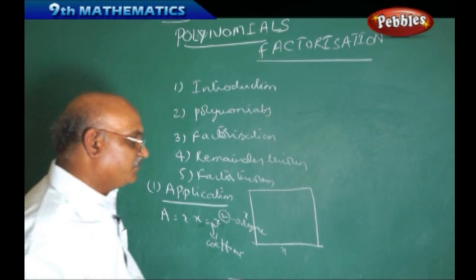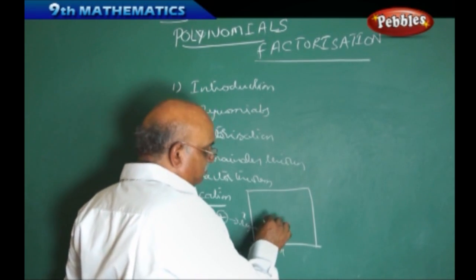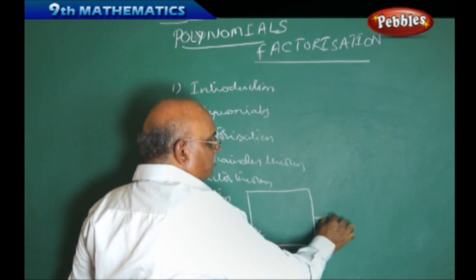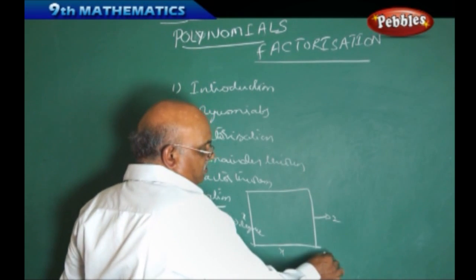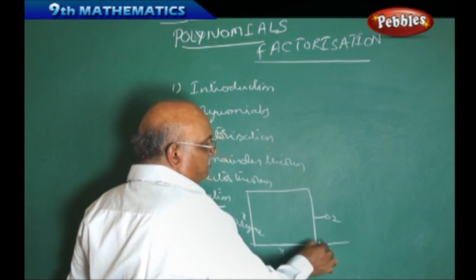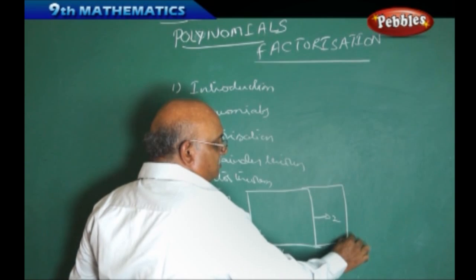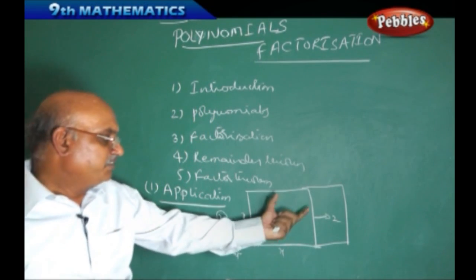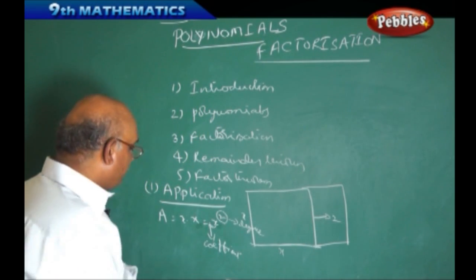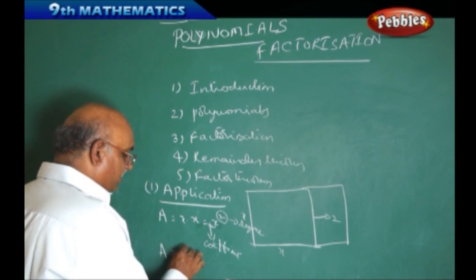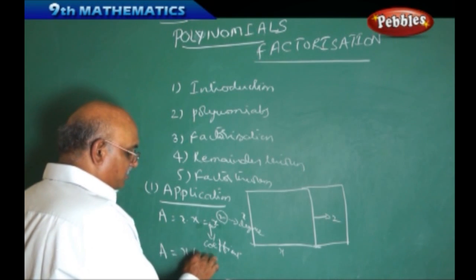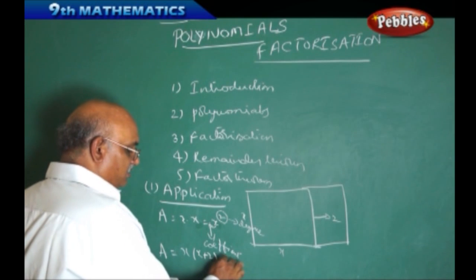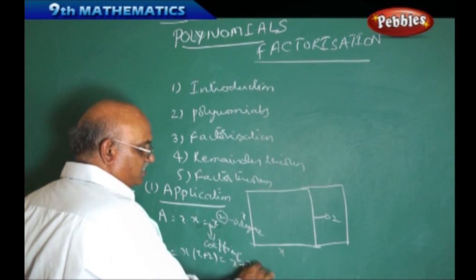Suppose if the area or the side of the square has been increased by 2 units — that implies if the length is increased by 2 units — then what is the area of the plot? At that time it will become a rectangle. Then the area of the rectangle can be written as A equal to x into x plus 2, which implies it will become x square plus 2x.